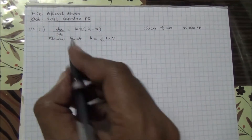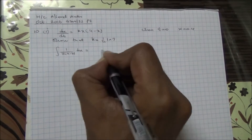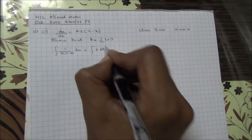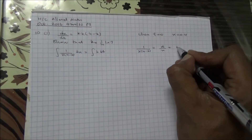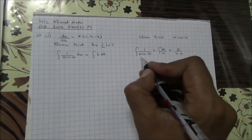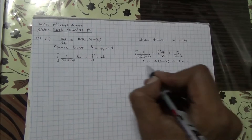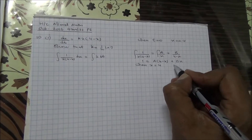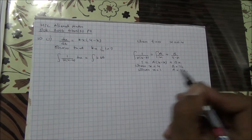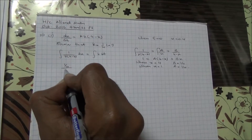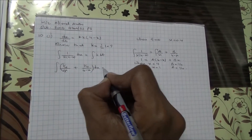We're going to solve this differential equation. Separate the variables — all the x terms come to one side. So the integral of 1 over x(4 - x) dx is equal to the integral of k dt. This requires partial fractions: 1 over x(4 - x) equals A over x plus B over (4 - x). We know that 1 = A(4 - x) + Bx. When x = 4, B = ¼. When x = 0, A = ¼. So we have ¼ over x plus ¼ over (4 - x), and the integral of all of that equals the integral of k dt.